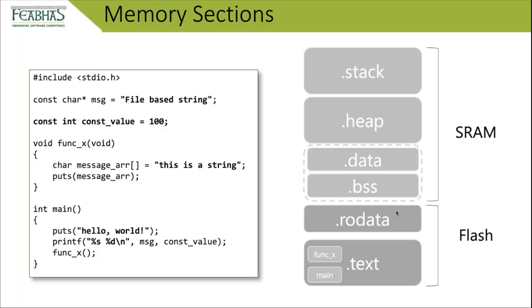The .text section (sometimes called .program) is where our code lives — the actual generated assembler for functions like main and func_x is concatenated into this region. The .rodata section (sometimes called .const) is for literals such as string literals. String literals like 'hello world' and printf format strings must persist and go into .rodata. Some toolchains include them directly in .text, but most modern compilers separate them into a distinct region.